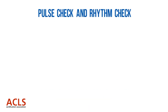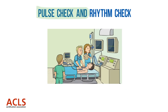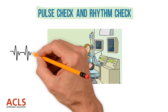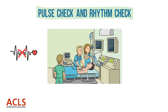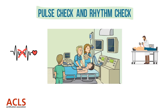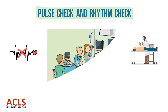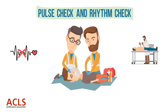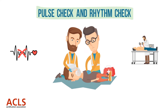After two minutes, perform a pulse check and a rhythm check. If there is no pulse but a shockable rhythm is present, clear the patient and deliver a shock. At this point, the rescuers must switch places — this is done to prevent rescuer fatigue. Studies have shown that once a rescuer feels strain and fatigue in the arms, the quality of chest compressions decreases. Resume chest compressions and ventilations immediately after giving the shock.